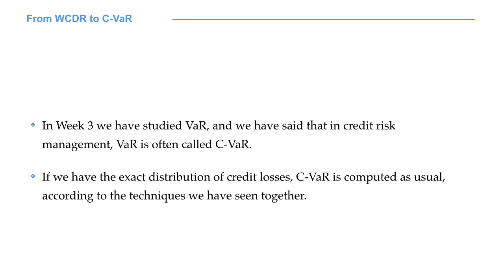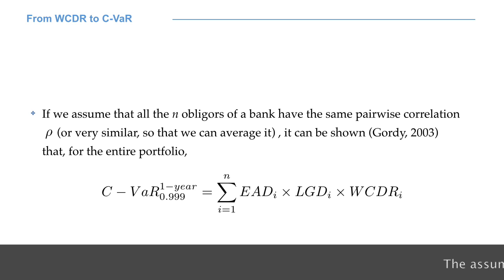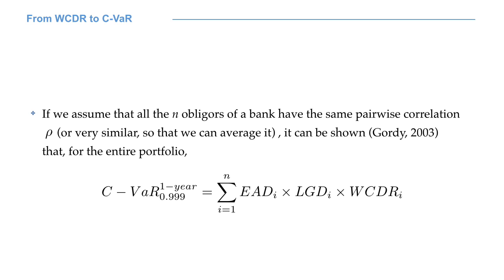However, when we think about future credit losses, their distribution is not exactly known in advance. We can surely use past information as a starting point, and then use some additional techniques. If we assume that all the N obligors of a bank have the same pairwise correlation ρ, or we know that the pairwise correlations are very similar so that we can average them, it can be shown that for the entire portfolio, the 1 year 99.9% VaR is well approximated by the formula you see on your screen.